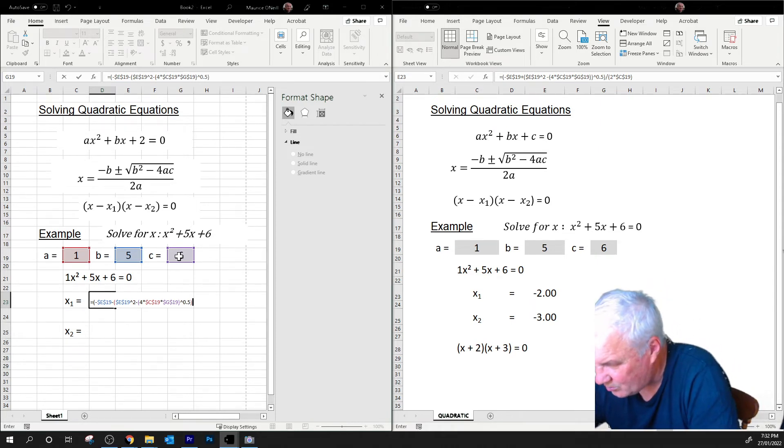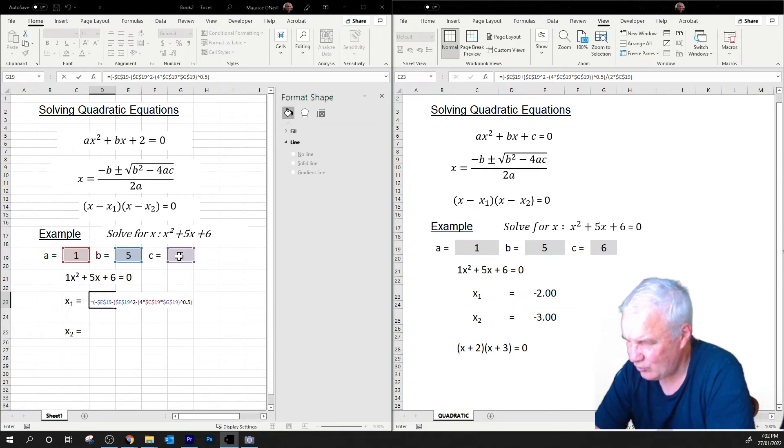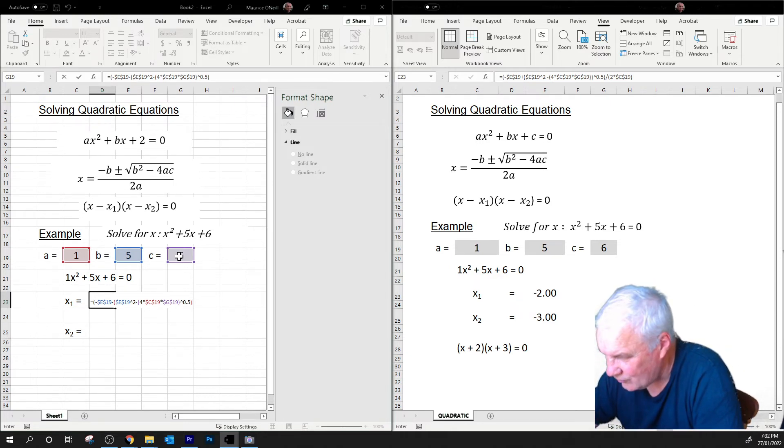So far we've got minus B plus the square root of B squared minus 4AC. Now we've got to divide that, so we'll go divide by, and we'll put it in a bracket, the whole of the bottom: 2 times A, which is C19. Close the bracket.